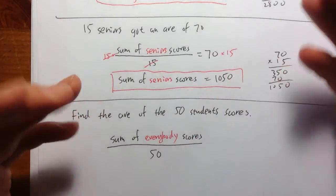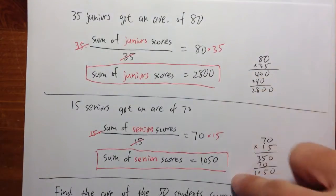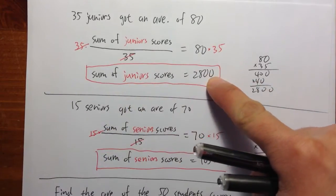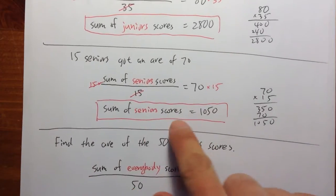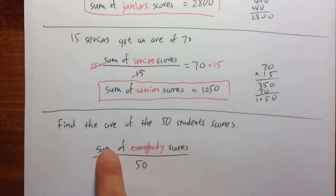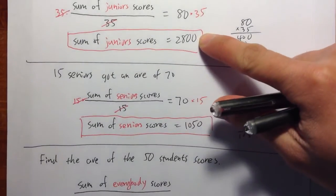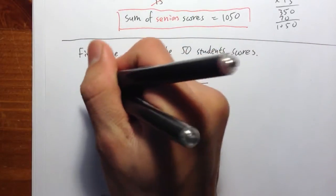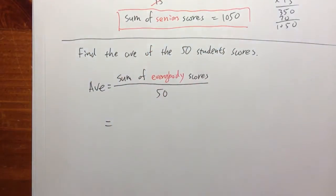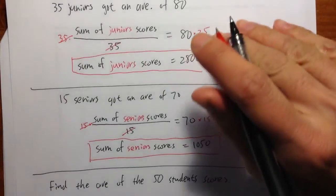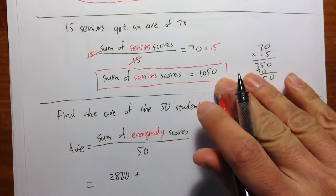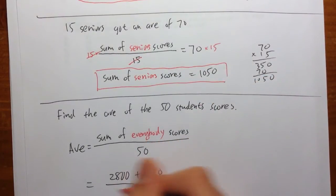Unfortunately, I don't have all the 50 tests, so that's why we need to use this. We know the sum of the juniors' test scores was 2800. And then the sum of the seniors' test scores was 1050. So the sum of everybody's score will be just 2800 plus 1050. So the average, let me write that down, the average is equal to that. So the top, I will have to do 2800 plus 1050, divided by total of 50 students.